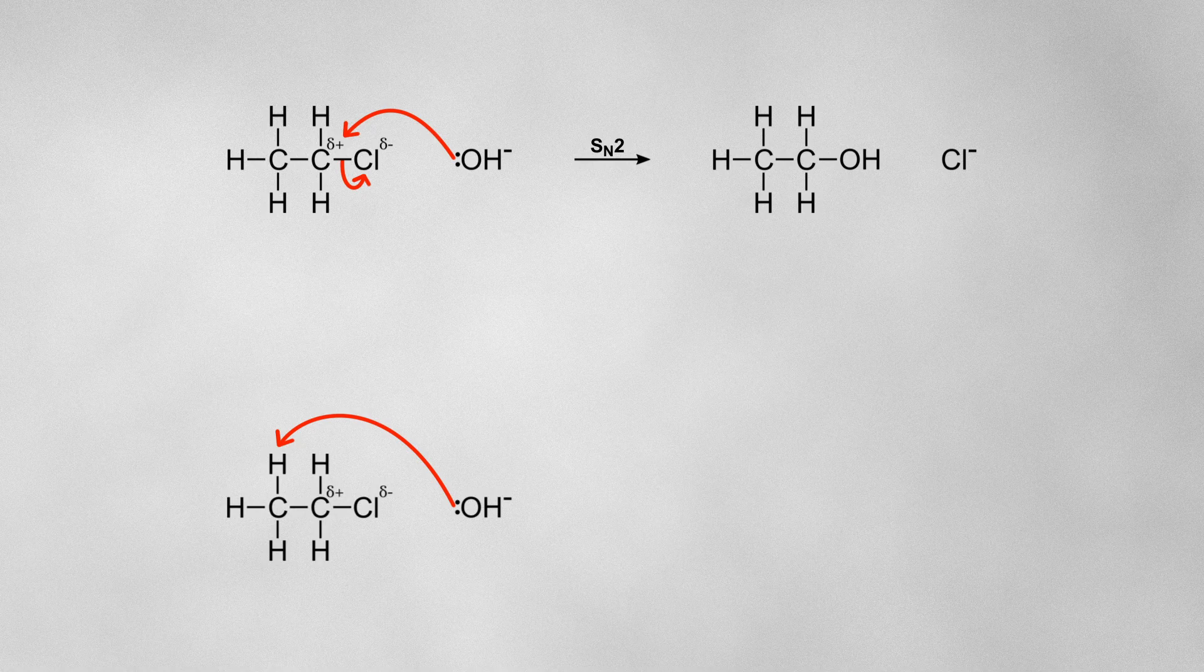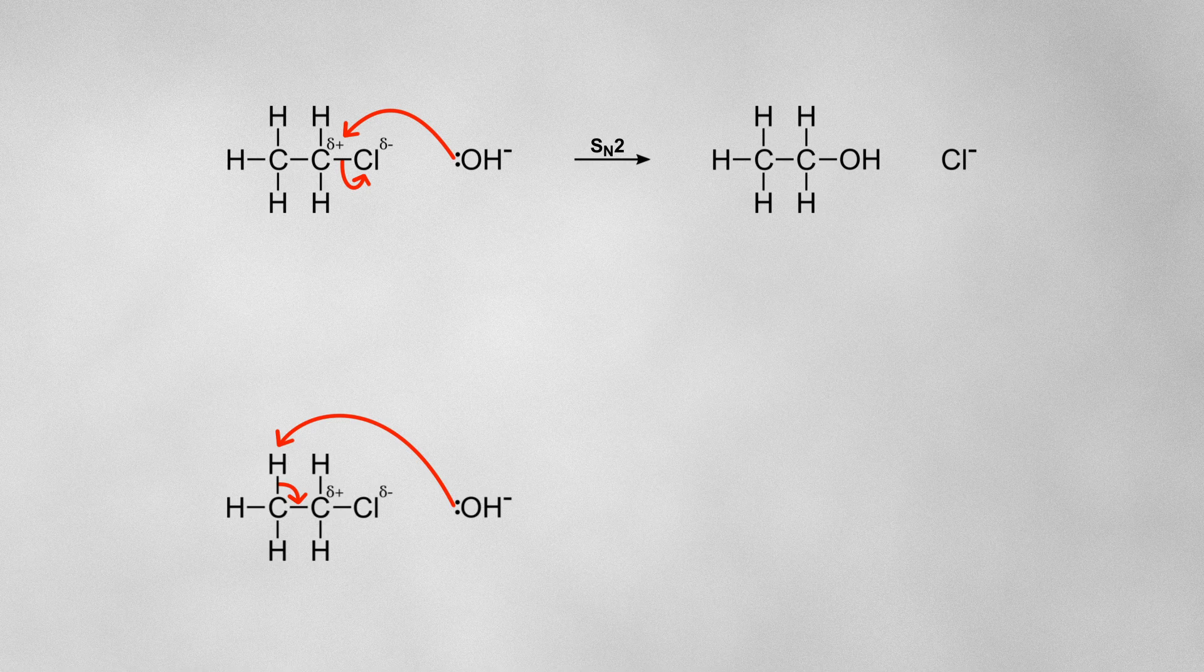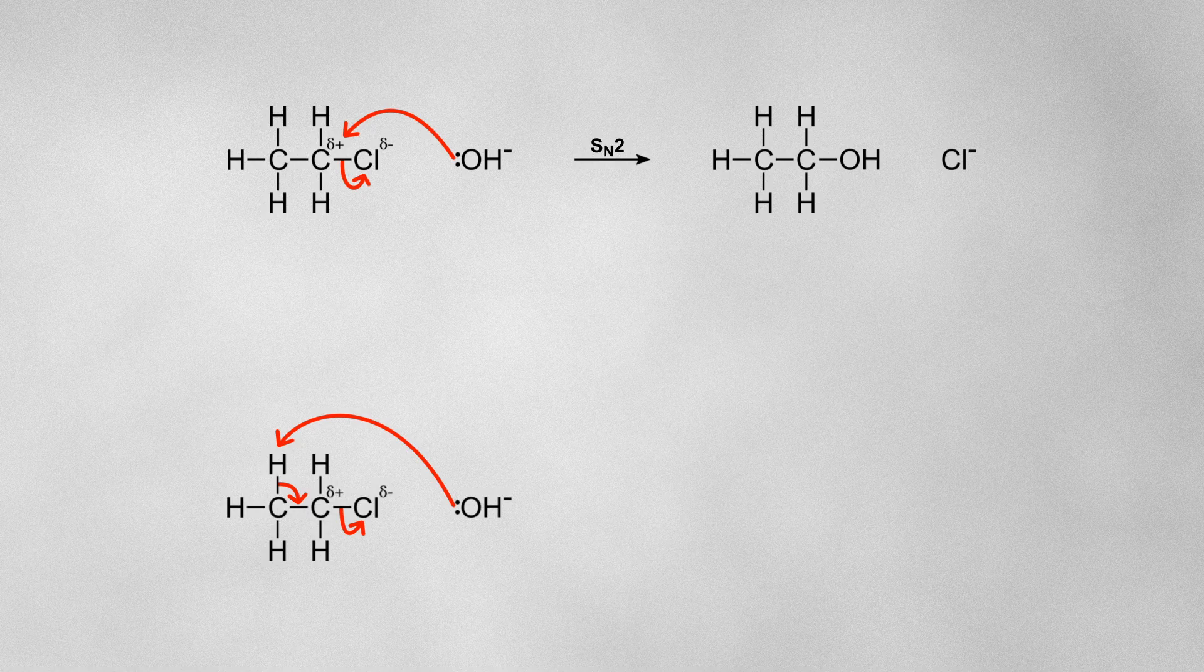this causes the electrons in the carbon-hydrogen bond to swing around and form a new carbon-carbon pi bond, which subsequently forces the electrons in the carbon-halogen bond to move all the way onto the halogen, kicking out a halide ion.